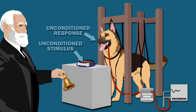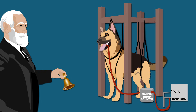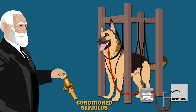A dog would not normally salivate in response to a random stimulus like a bell ringing, since such an event is a neutral stimulus. However, Pavlov found that if he always rang a bell before presenting dogs with food, they eventually began to salivate as soon as they heard the bell, even when there was no food around. At this point, the bell had become a conditioned stimulus, and the dog salivating to its sound was a conditioned response.